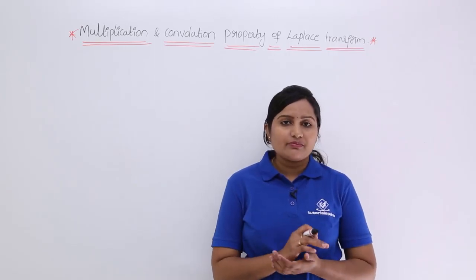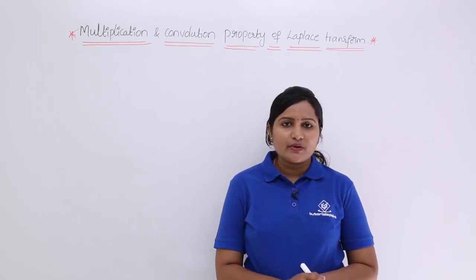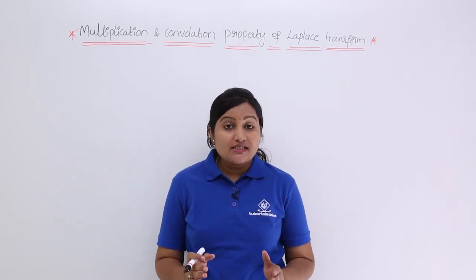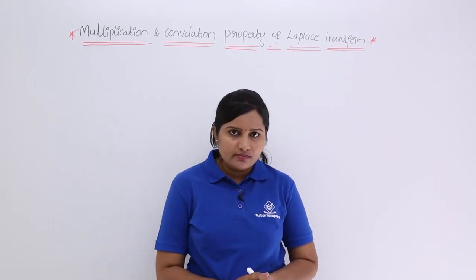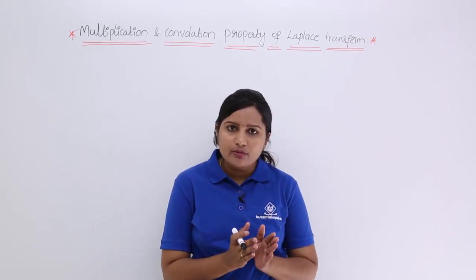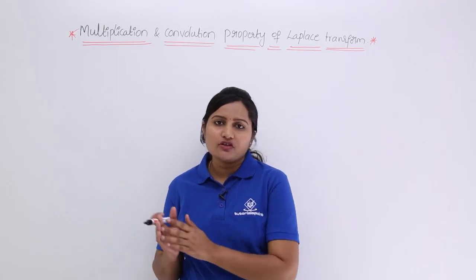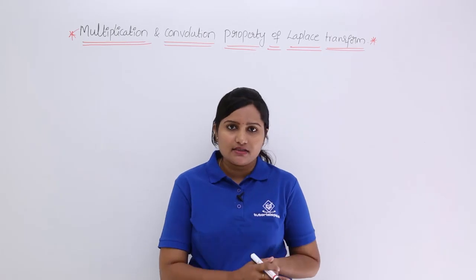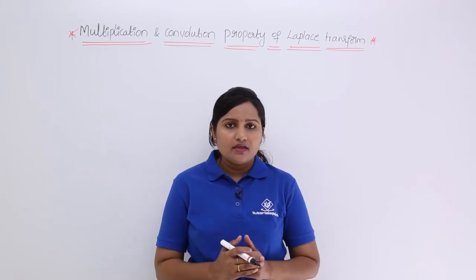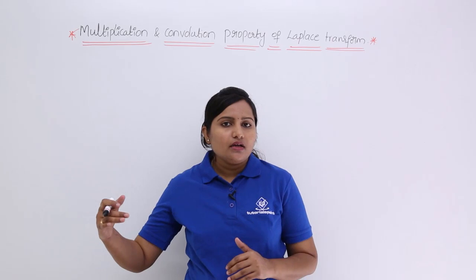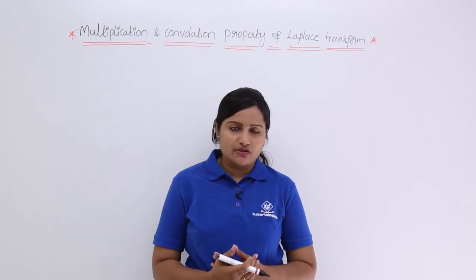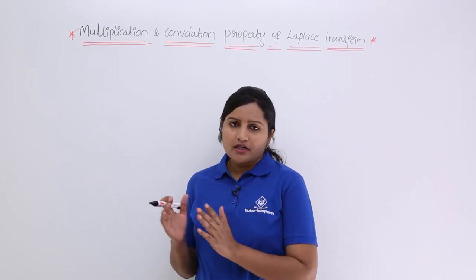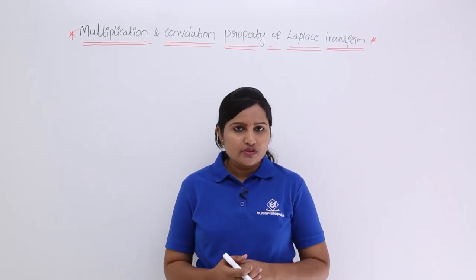In this video we are going to discuss multiplication and convolution properties of Laplace transform. That means if you are having two signals and their corresponding spectrums, if you multiply those signals in time domain, what is the effect on the spectrums? How will you get the resultant spectrum of the multiplied signals? Similarly, if you convolve those two signals, how will be the resultant spectrum in frequency domain? We are going to discuss this by taking two signals separately.